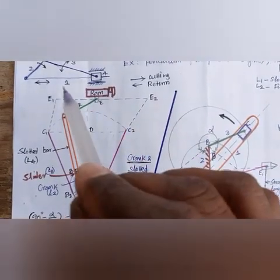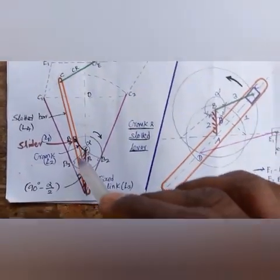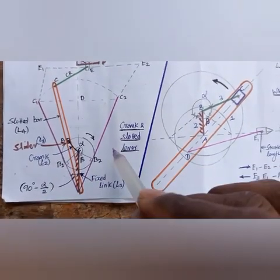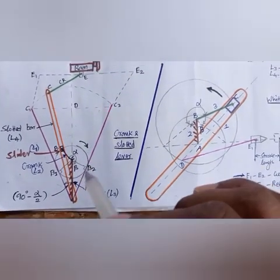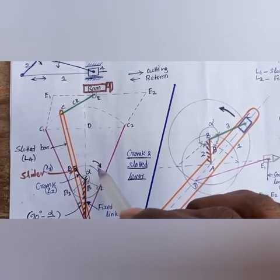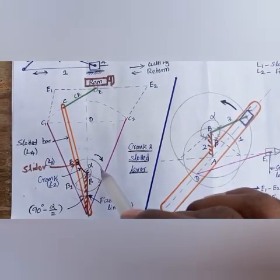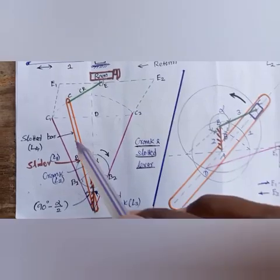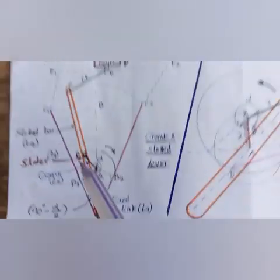E1 to E2 is called the cutting stroke, and E2 to E1 is the return stroke. Angle alpha is the covering angle for the cutting stroke (B1 to B2), which covers the larger angle and takes more time. The return stroke (B2 to B1) covers the lesser angle beta. So alpha is greater than beta, meaning the cutting stroke time is more and the return stroke time is less. The half angle equals 90 degrees minus alpha by 2.